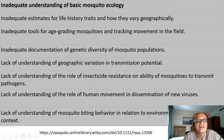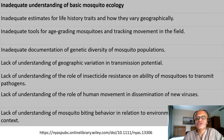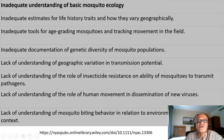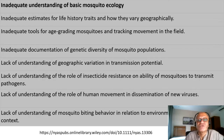Understanding basic mosquito ecology reveals several things that are not well understood. There are inadequate estimates for life history traits and how they vary geographically, which obviously depends on the mosquito species and its reliance on a habitat — it could be shady, vegetated, moist regions, or standing waters in urban settings. There are also inadequate tools for age grading mosquitoes and tracking their movement in the field. Some birds, for example, are fitted with GPS and can be tracked, and the same is done for many animals which carry pathogens.